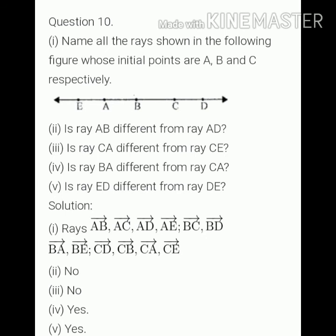It means we have to write the names of rays starting from A, B, and C. So the names are AB, AC, AD, AE. These are the rays starting from point A.